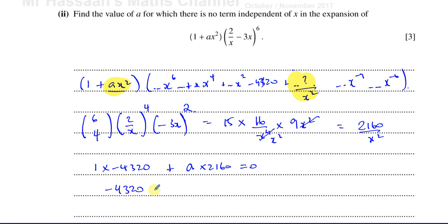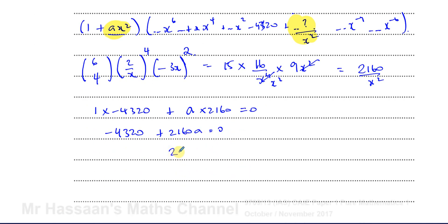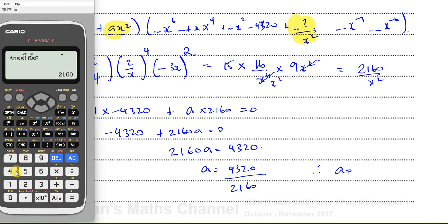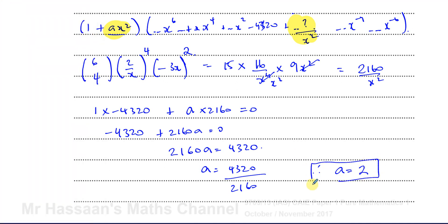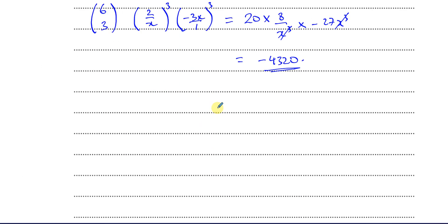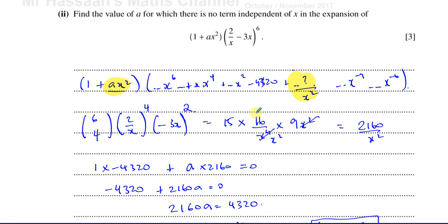So we have: −4,320 + 2,160a = 0. Adding 4,320 to both sides and dividing by 2,160: a = 4,320 ÷ 2,160 = 2. So a is equal to 2. That's the answer to part 2 — you have to identify the different combinations that give a constant term and set their sum equal to 0.